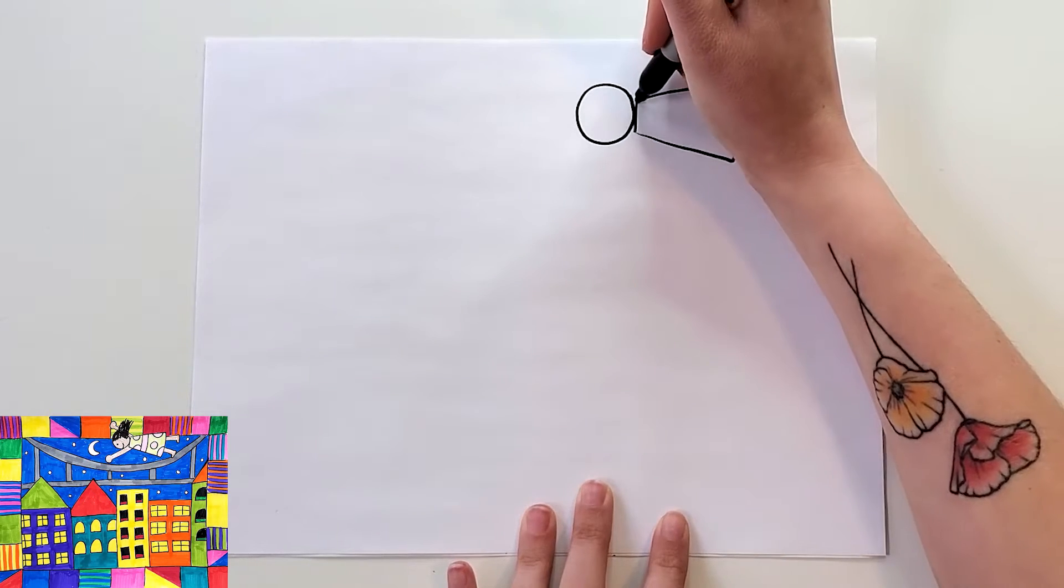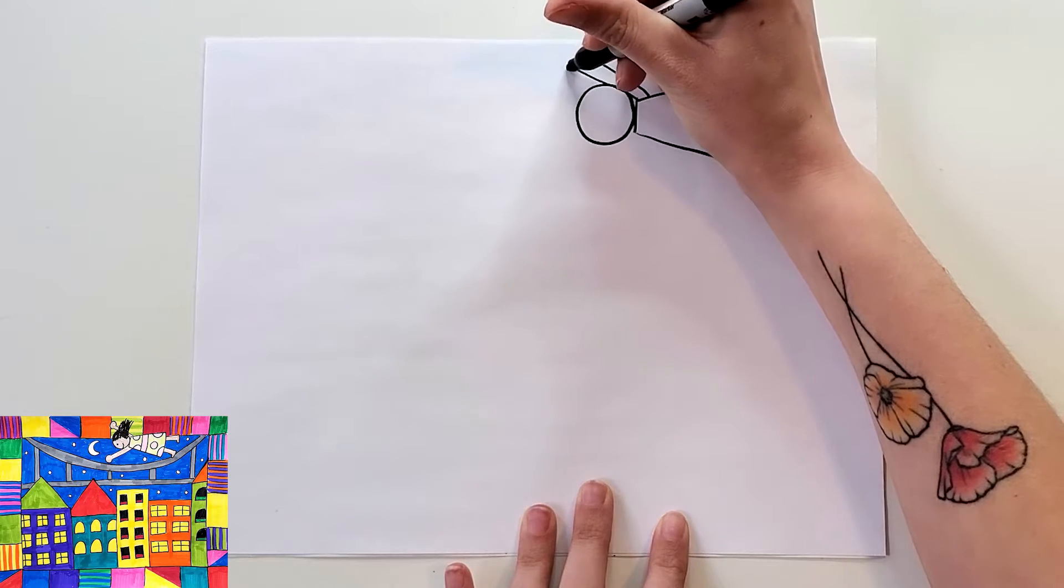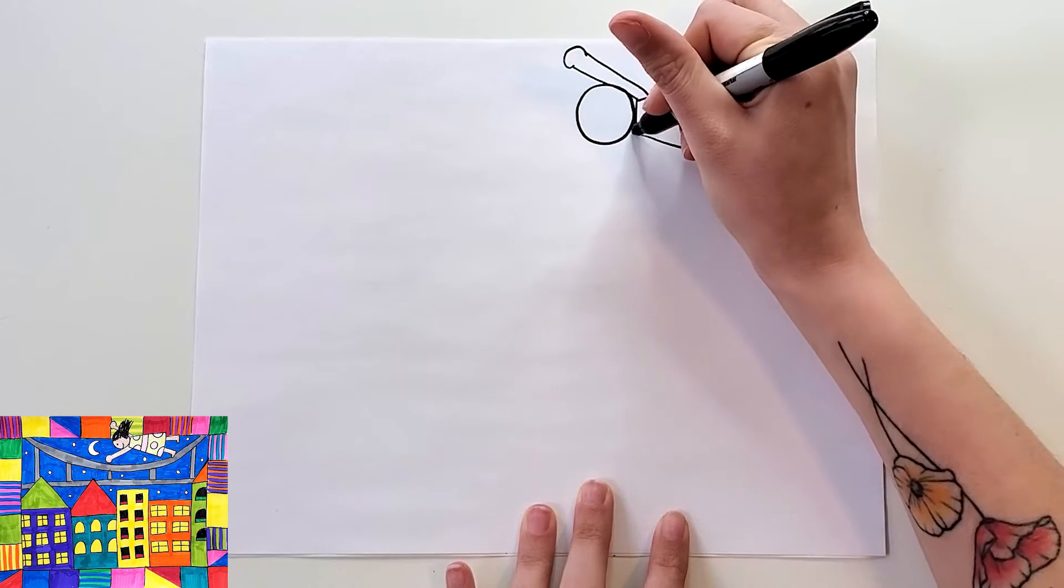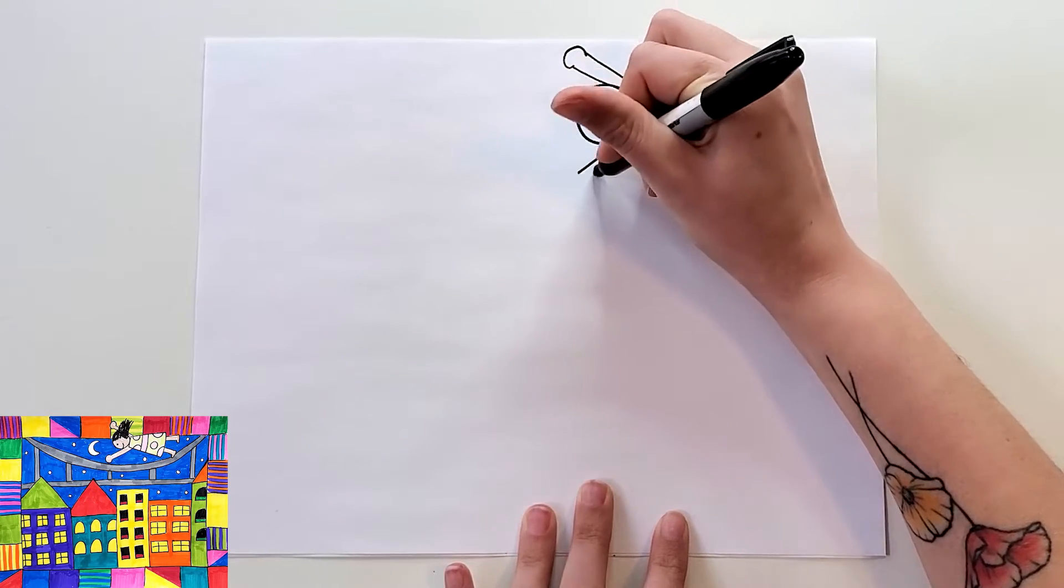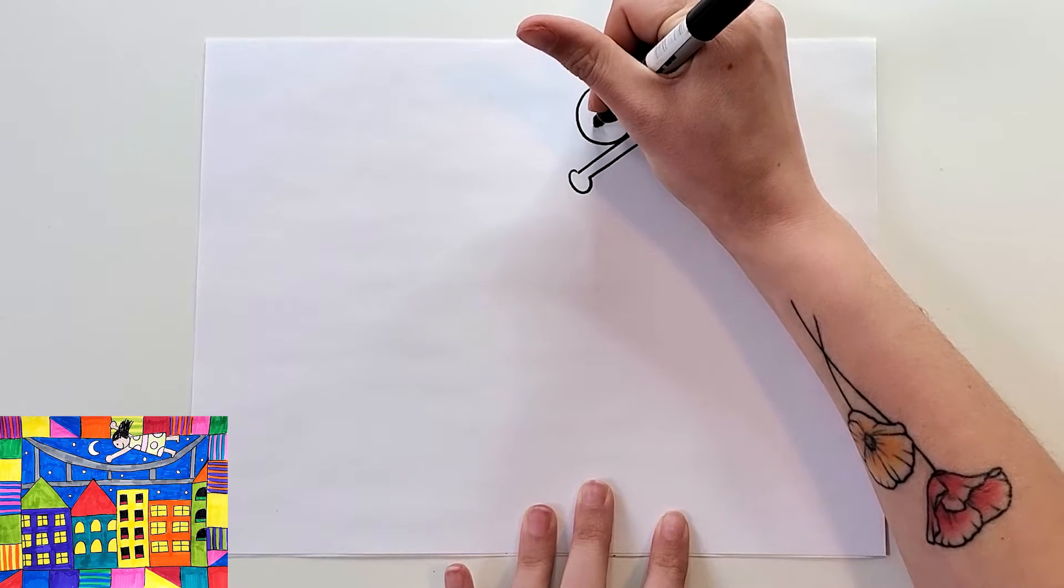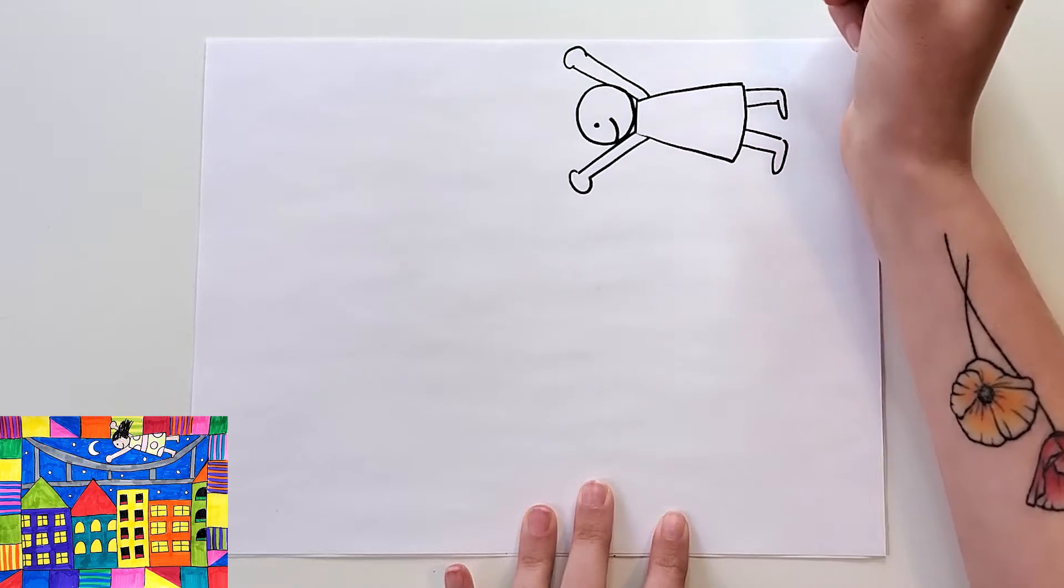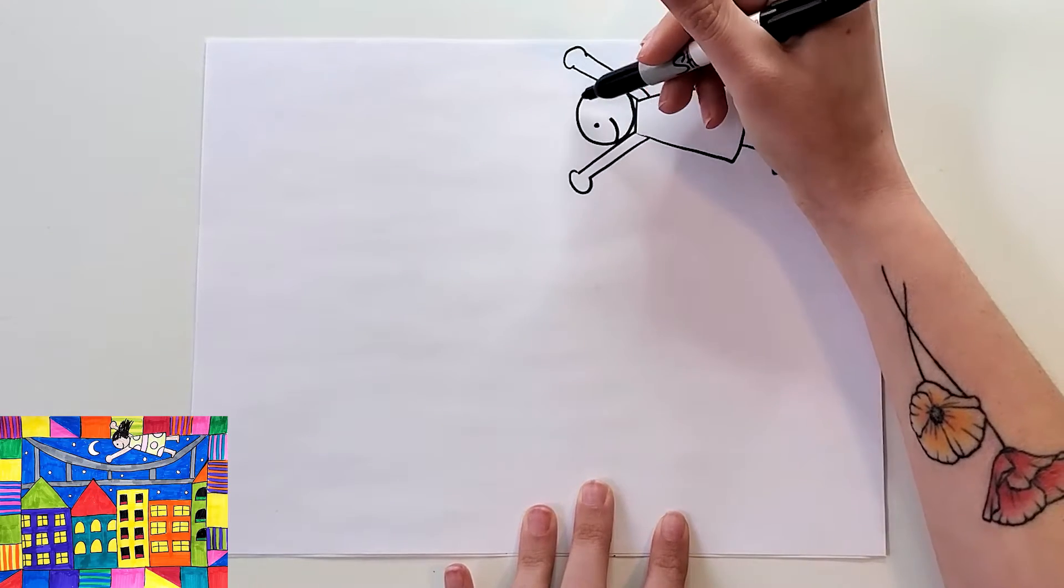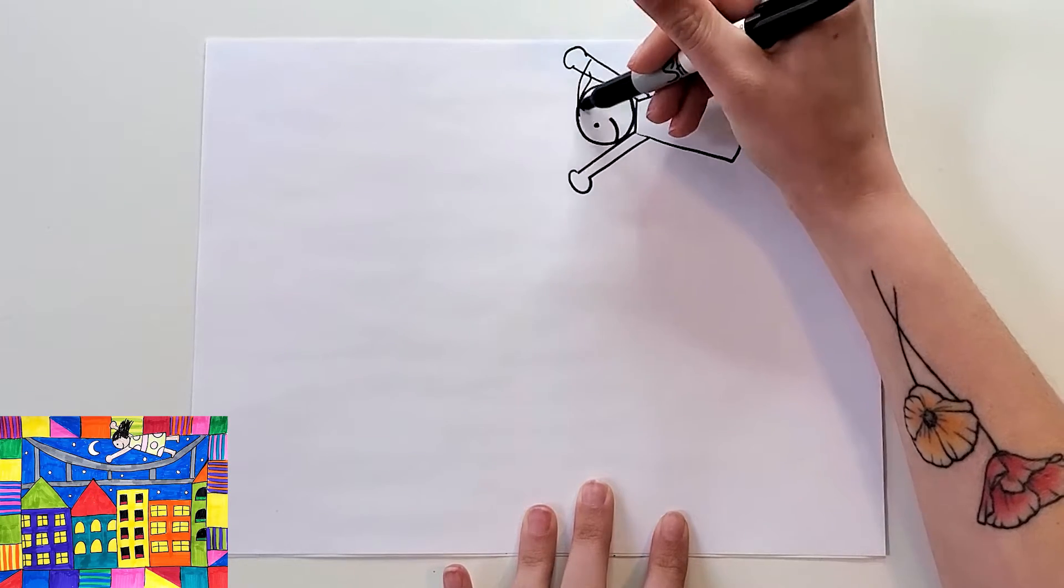Then each arm is also going to be two lines and a circle at the end. And then I'm gonna have the eye over here with a smile because she's looking to the side. And then you can have the hair kind of flowing.